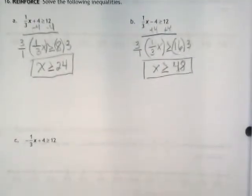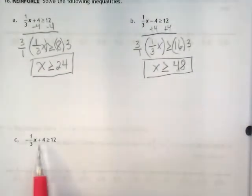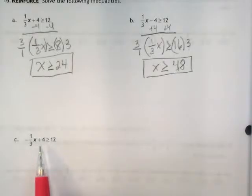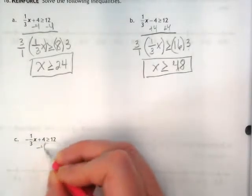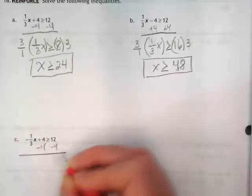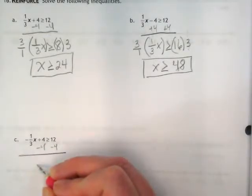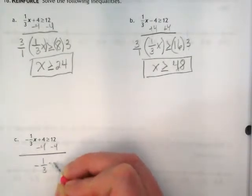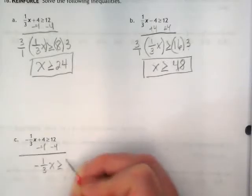And that leaves us with one more problem down here. We're back to having a positive 4, so our first step is going to be to subtract the 4. This time, the fraction isn't positive, it's negative, so we need to make sure we keep that with it. Negative 1 third x is greater than or equal to 8.